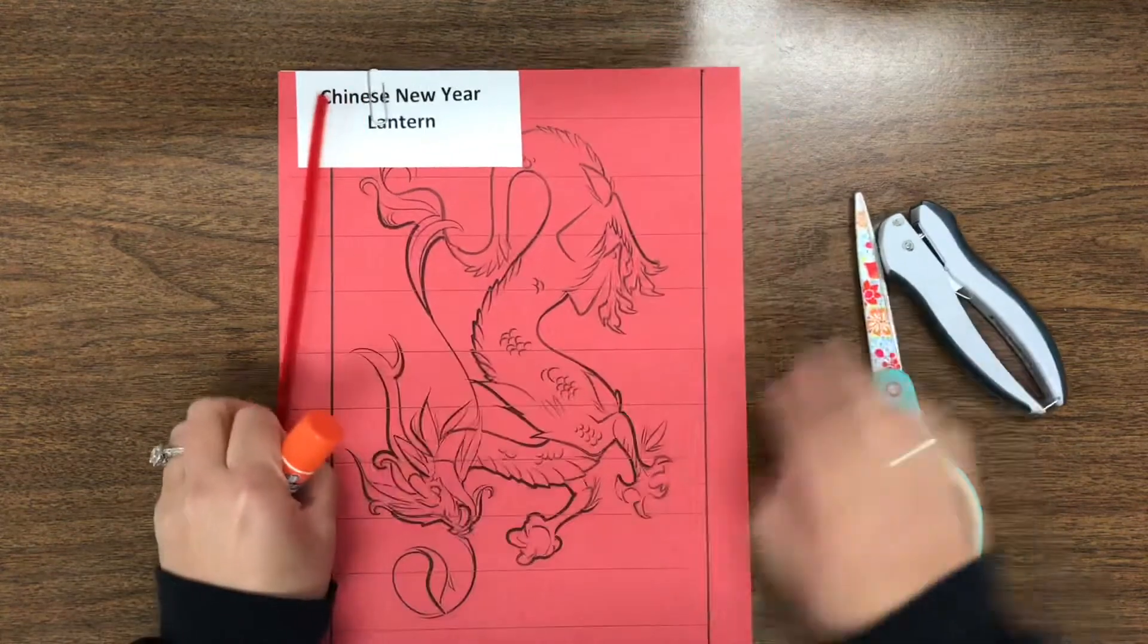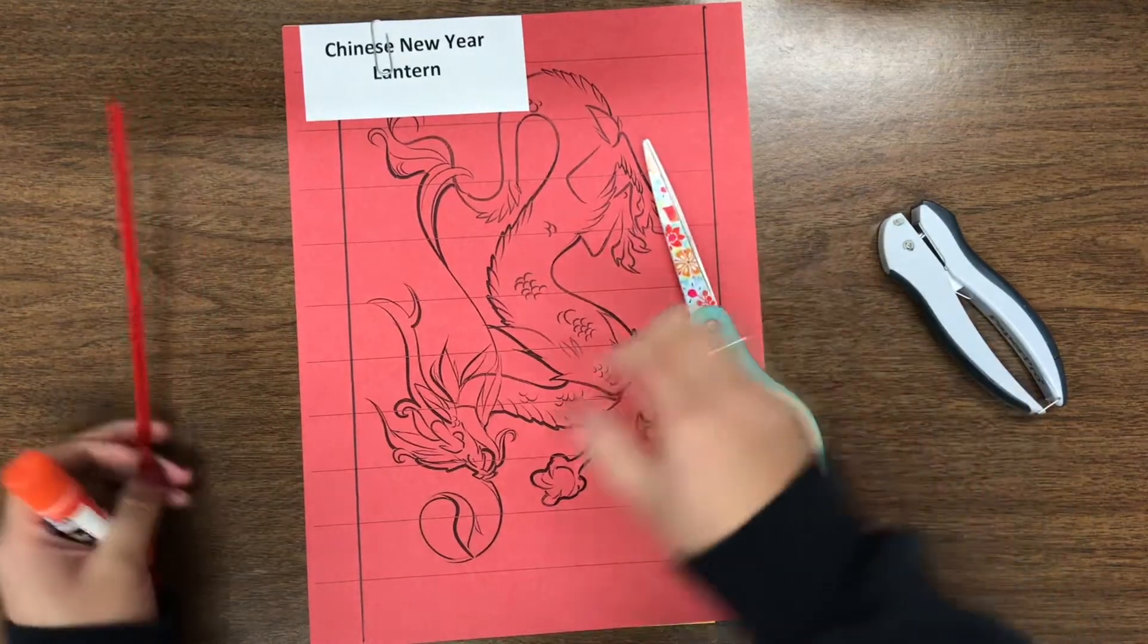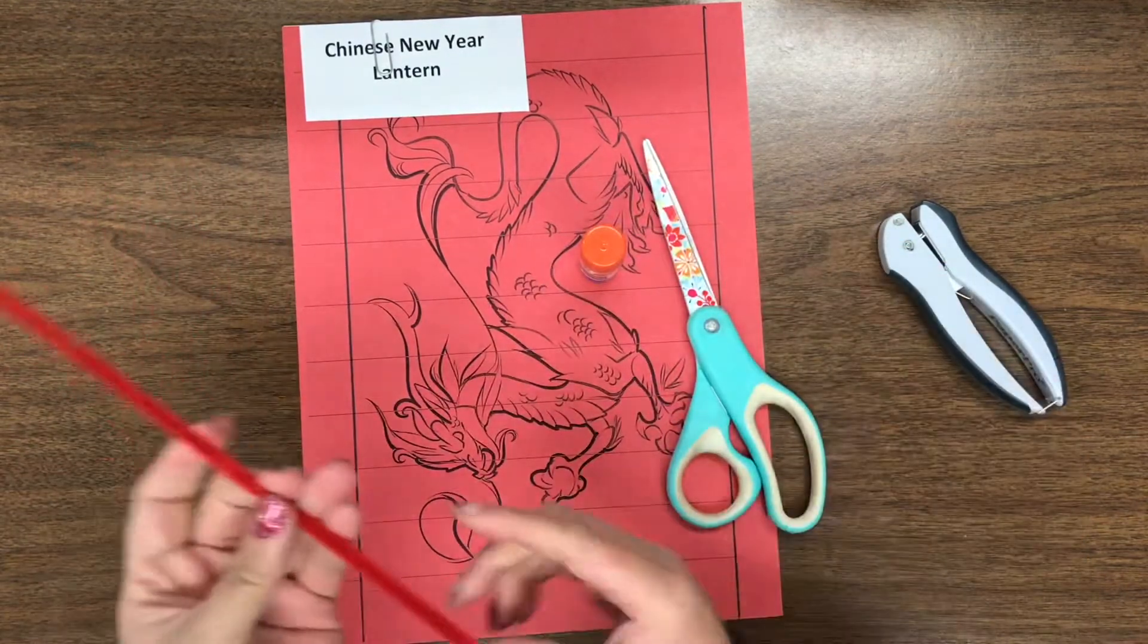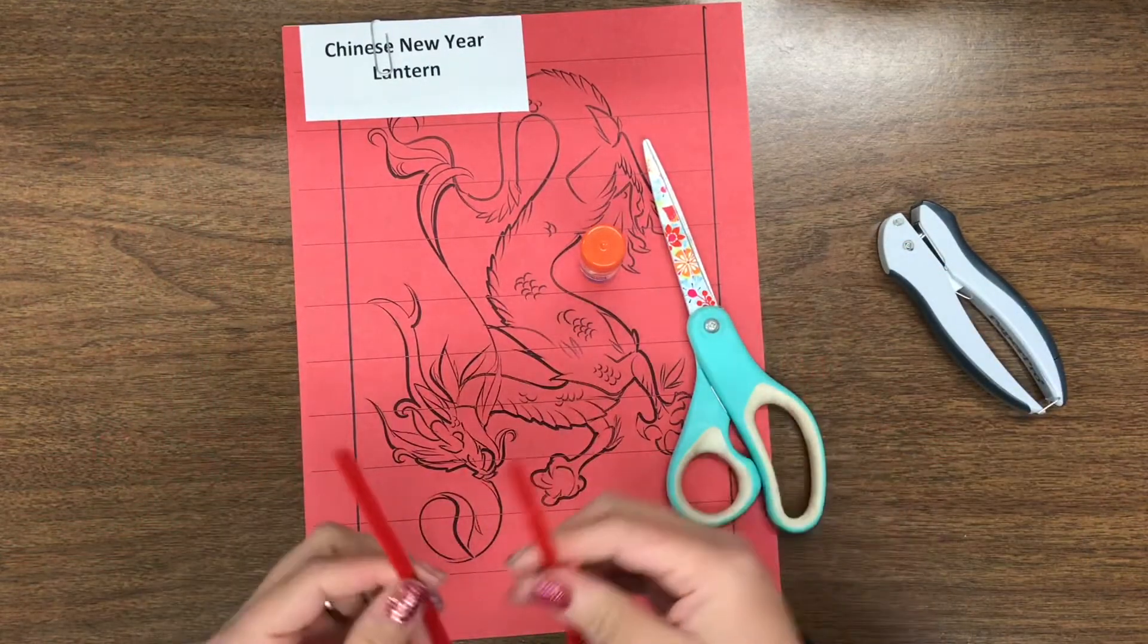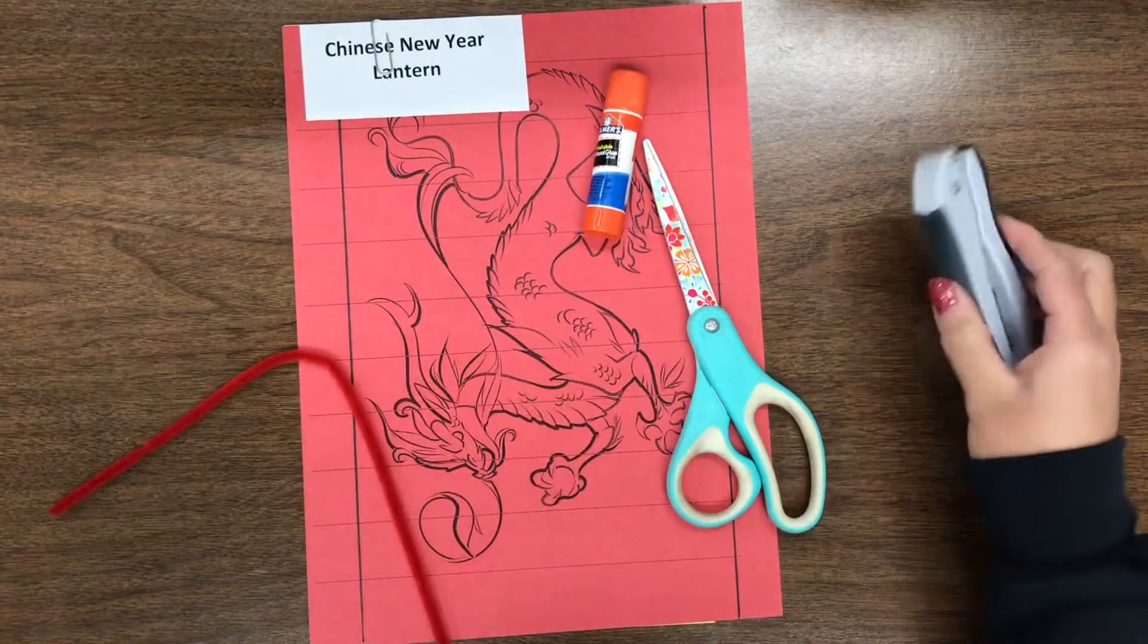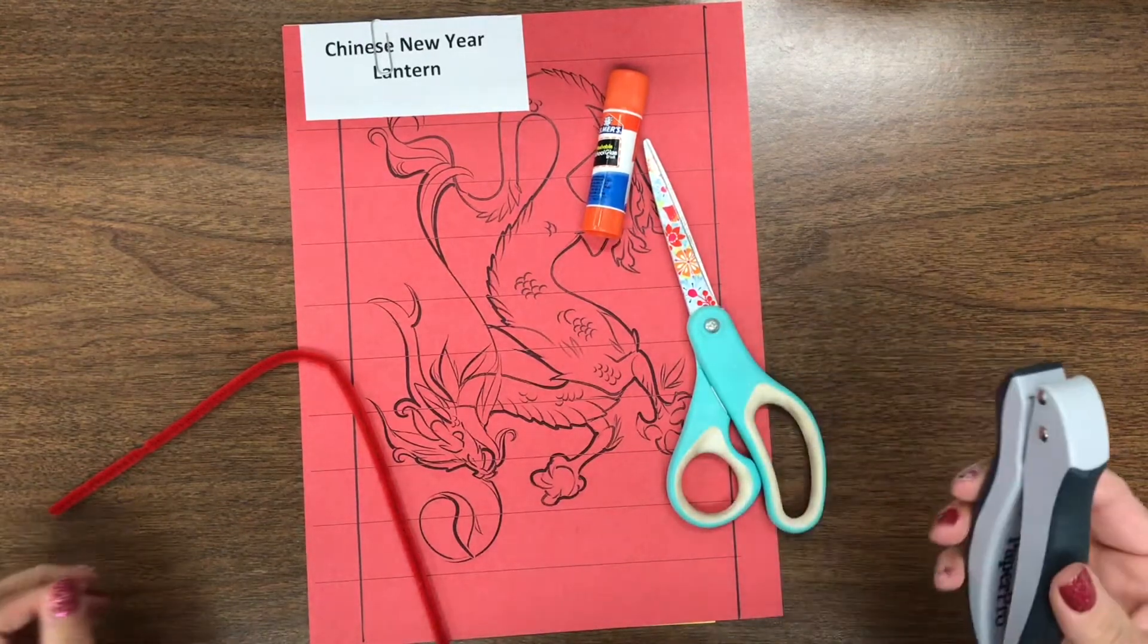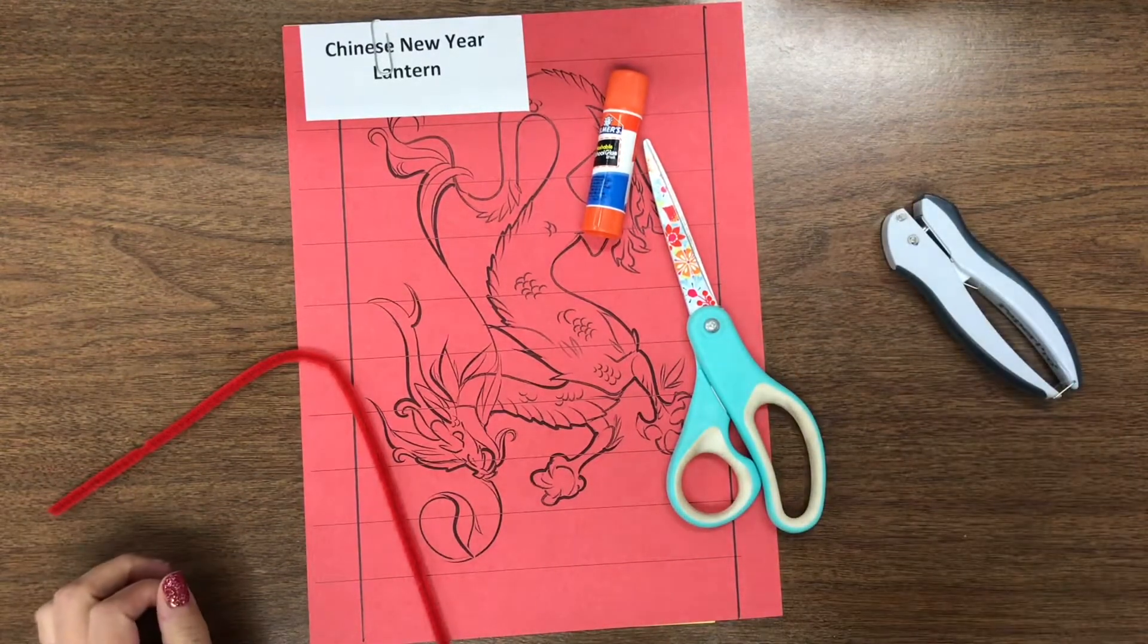You're gonna need your Chinese New Year lantern papers, a pair of scissors, a pipe cleaner that was in your material bag, and a hole punch. And if you don't have a hole punch, then you can have a grown-up help you poke some holes later.